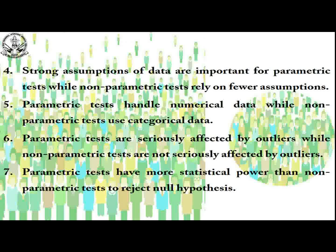Parametric tests are seriously affected by outliers, while non-parametric tests are not seriously affected by outliers. Outliers are observations which lie at an abnormal distance from other values in a random sample from a population. For example, if the sodium range in serum is 133 to 146 millimoles per liter, but a sample reports 75 or 210 millimoles per liter, that one or two samples reporting that way would disturb the mean of the complete dataset — that is coming as an outlier.